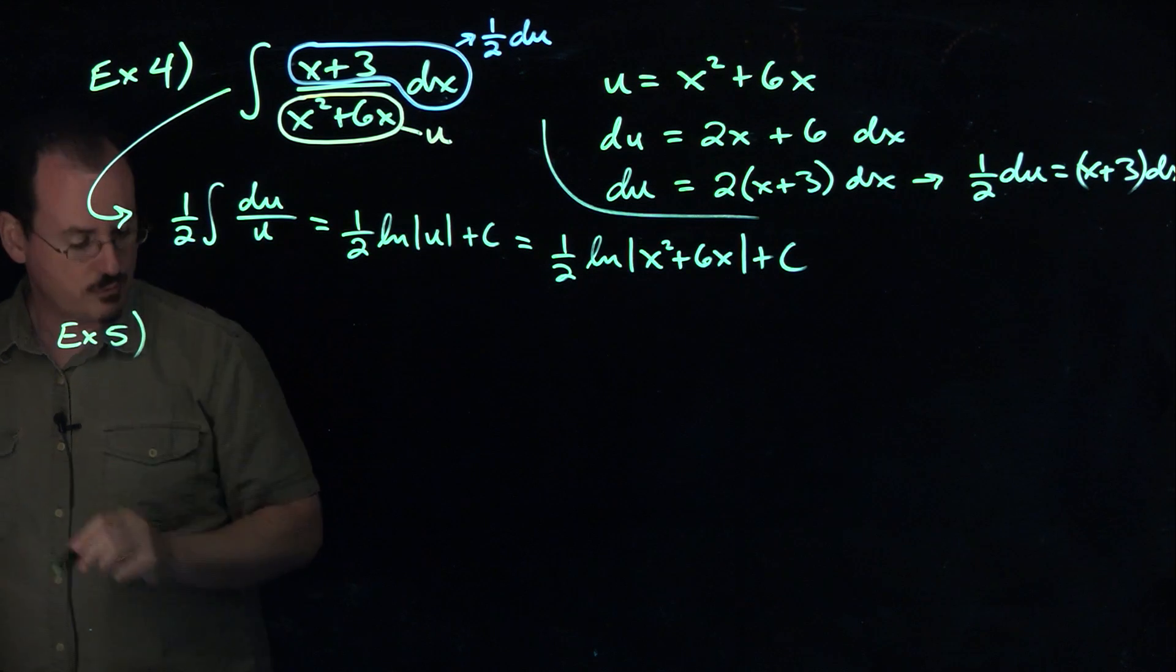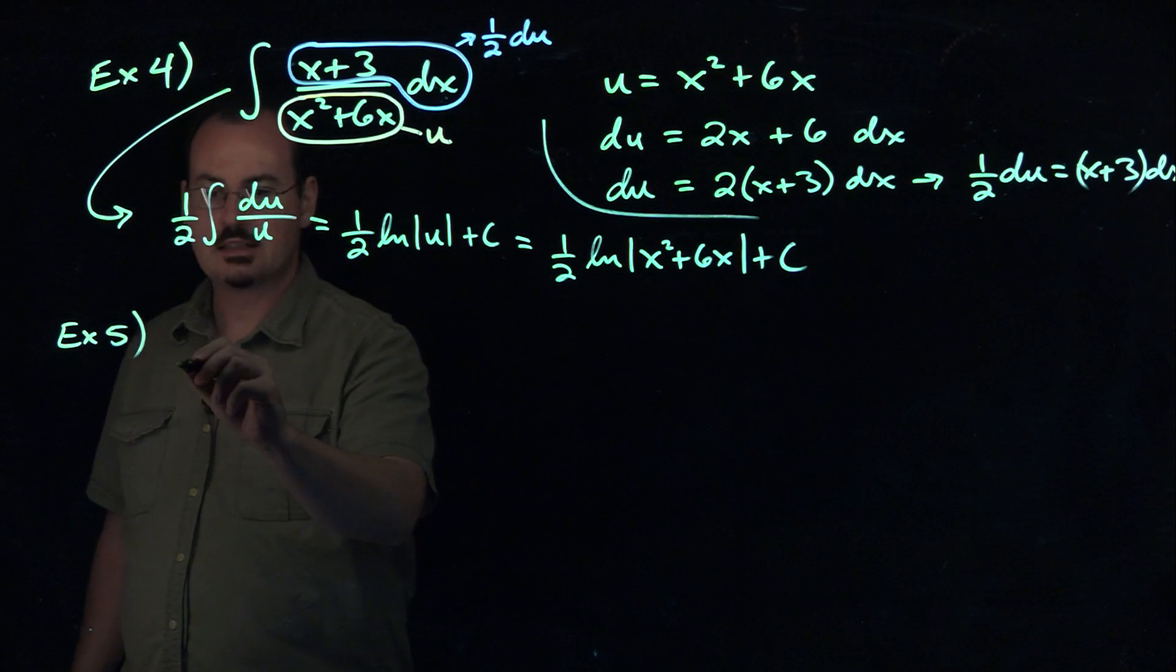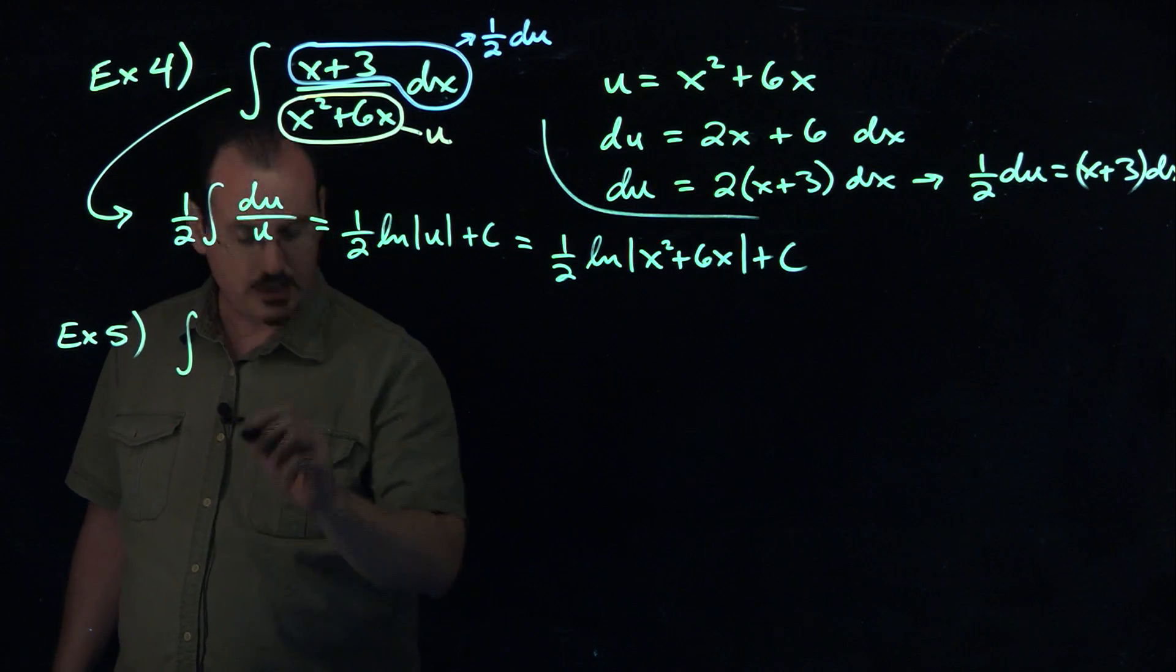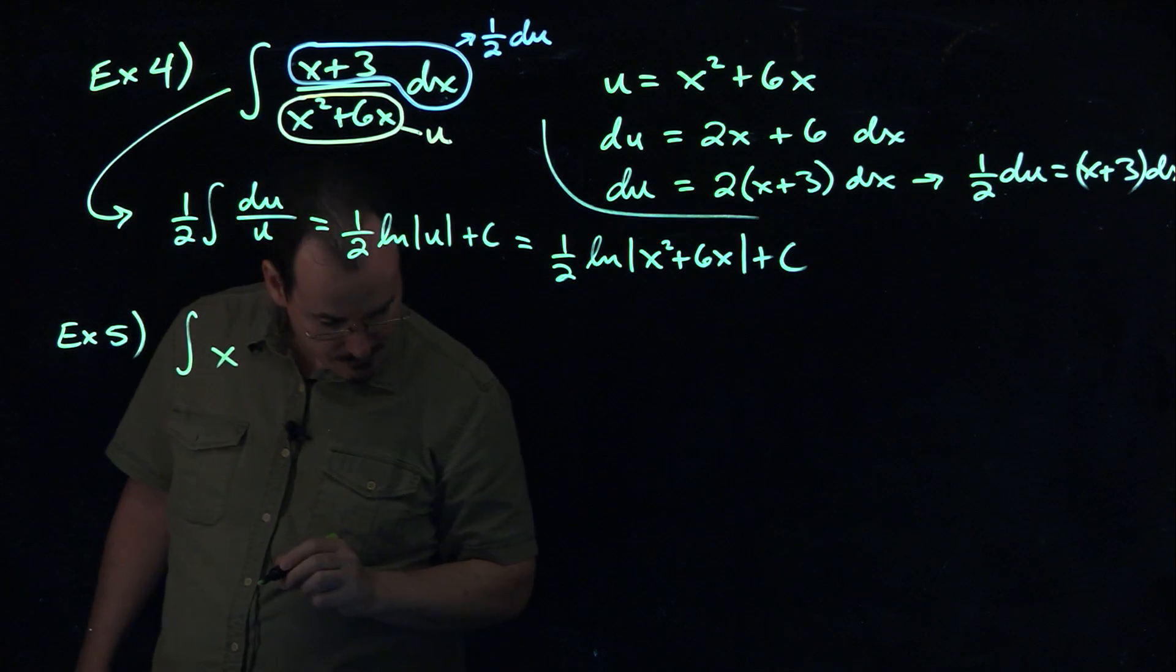These are not that long, so we can do two of them on one. So this one is asking us to find x squared e to the power of x cubed.